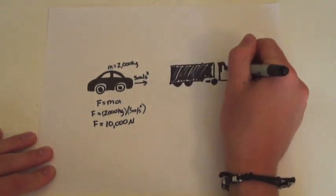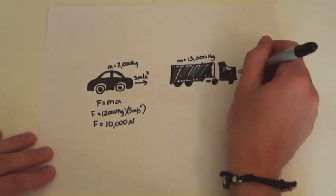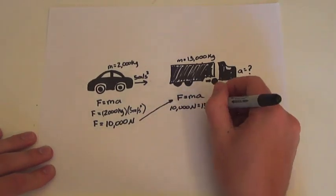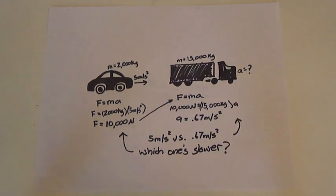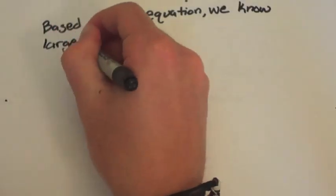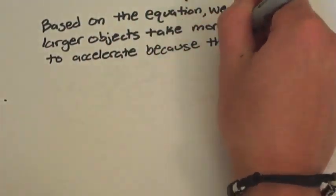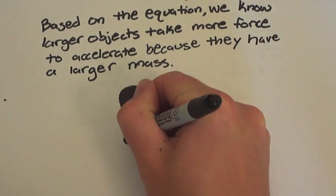Now a massive truck weighing 15,000 kilograms with the same force of 10,000 newtons will only accelerate at 0.67 meters per second. Based on the equation, we know that larger objects take more force to accelerate them because they have more mass.